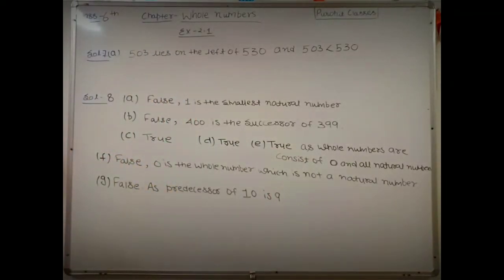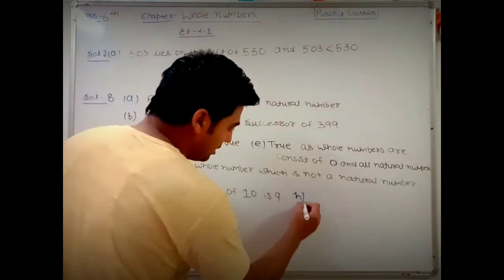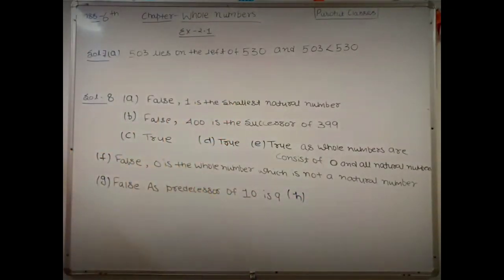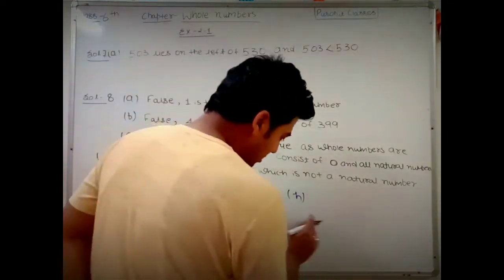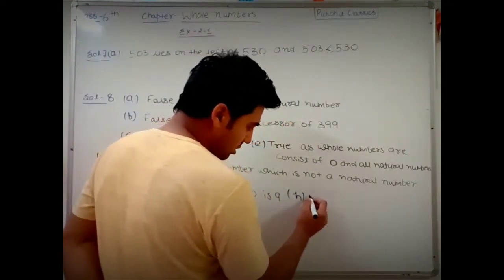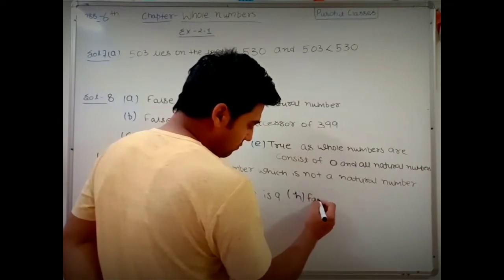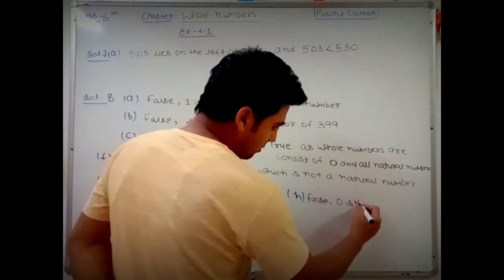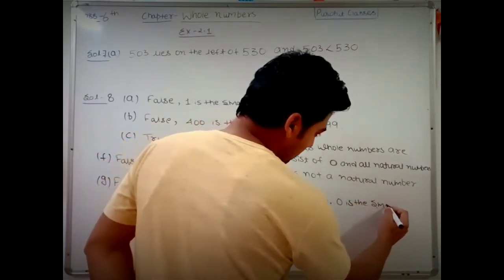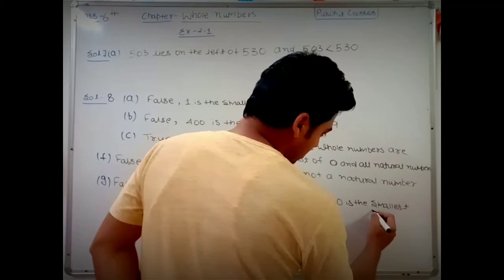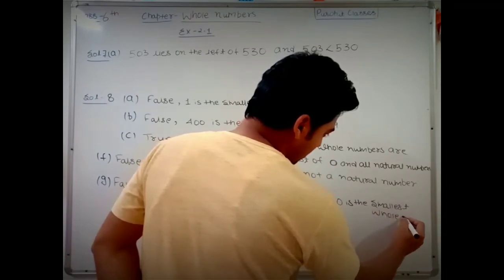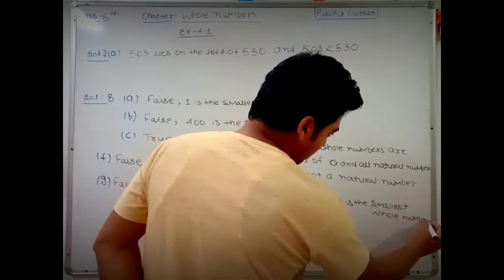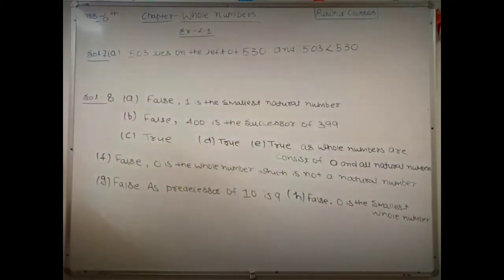Part h says: one is the smallest whole number. This is absolutely wrong, because the smallest whole number is zero. So the answer is false. The correct statement is: zero is the smallest whole number.